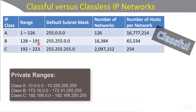Class B has a range of 128 to 191. If you have a network within there, like a private number such as 172.16.1.1, the default subnet mask would be 255.255.0.0. In class C, the range is 192 through 223. So for example, if you had a SOHO router on 192.168.0.1, its default class C subnet mask would be 255.255.255.0.